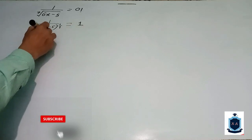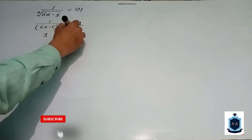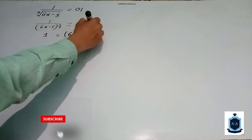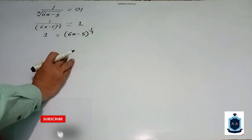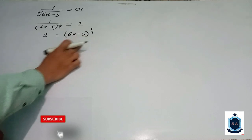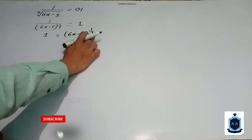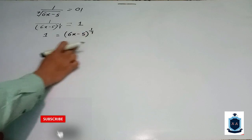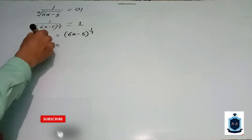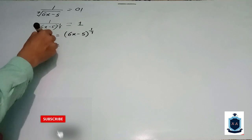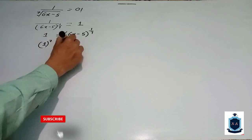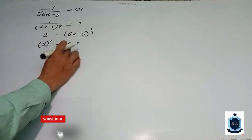...it becomes six x minus five to the power of one upon seven equals one. Now, to cancel the one-upon-seven power, we multiply the exponent by seven on both sides. Seven multiplied by one is seven, so six x minus five to the power of seven over seven equals one.